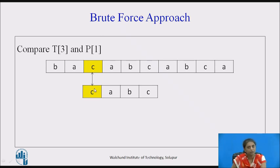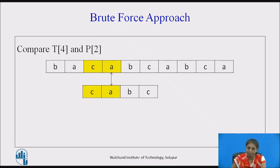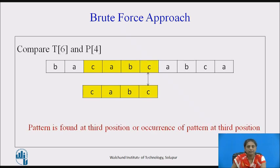When there is a match, we move the pointer to the right — not the window. We match the fourth character of the text with the second character of the pattern. Whenever there is a match we move the pointers of text and pattern; whenever there is a mismatch we shift the window of the pattern. B is matched, then C is matched, and we have reached the end of the pattern — the complete pattern is found in the text at position 3.